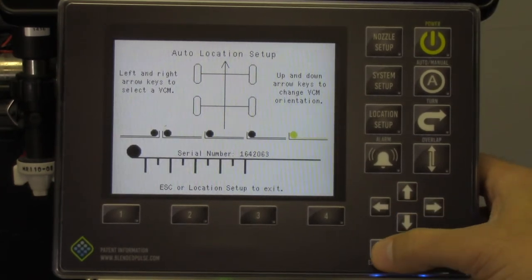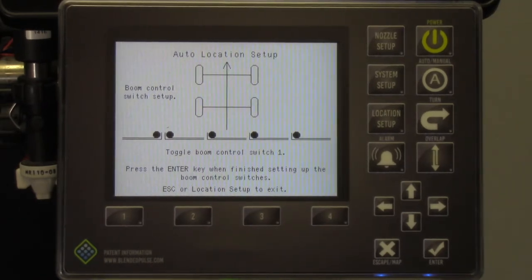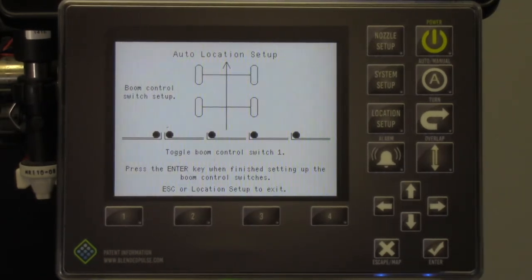This is the boom switch assignment screen. Every VCM is hardwired to a section via gateway hub. This assigns the VCMs to certain boom sections so the section control switches have ultimate shut off power. You will want to make sure all of your boom switches in the cab or on the rate controller are shut off before you start this step.